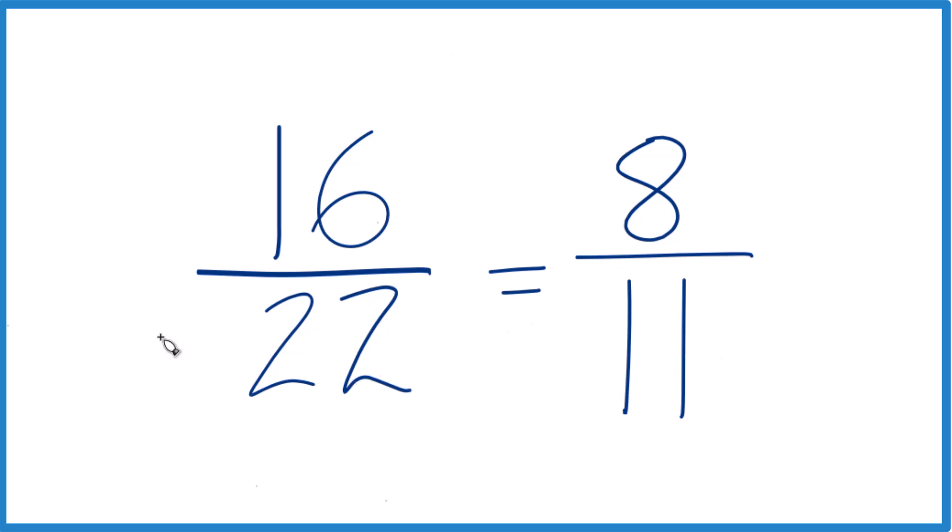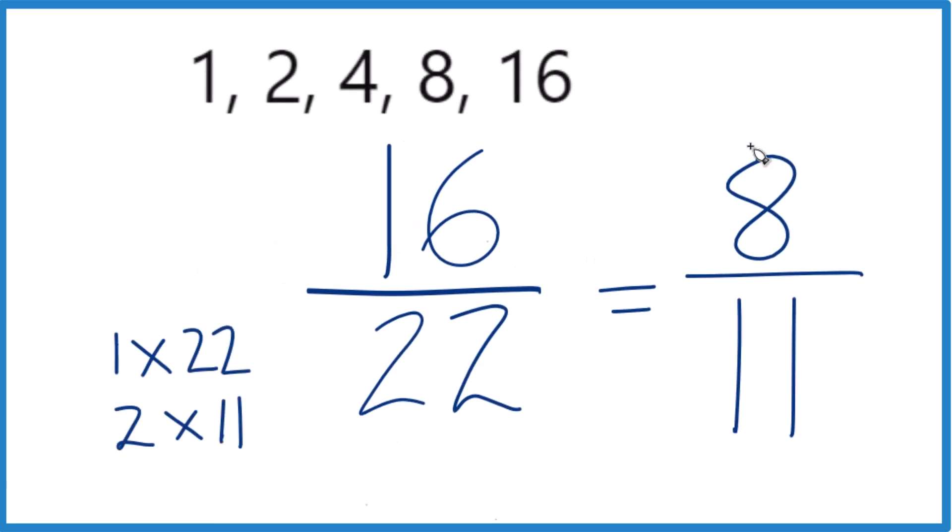We could also write out the factors of 16 and 22, and you'd see that the greatest common factor is 2. So we divide 16 by 2, 22 by 2, and we'll end up with 8/11, just like we did before.